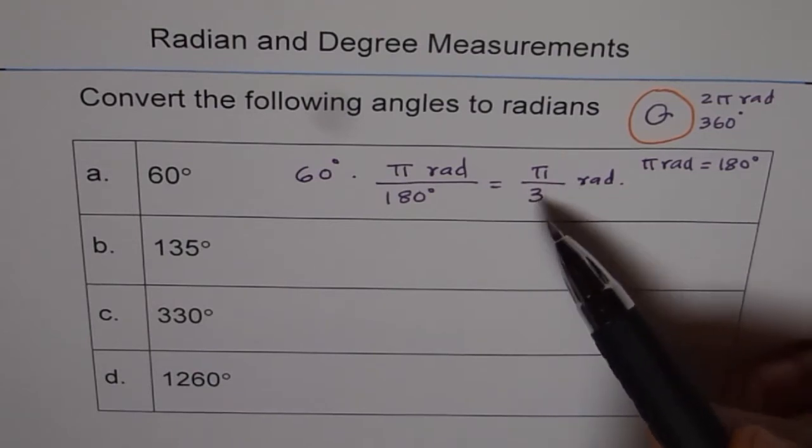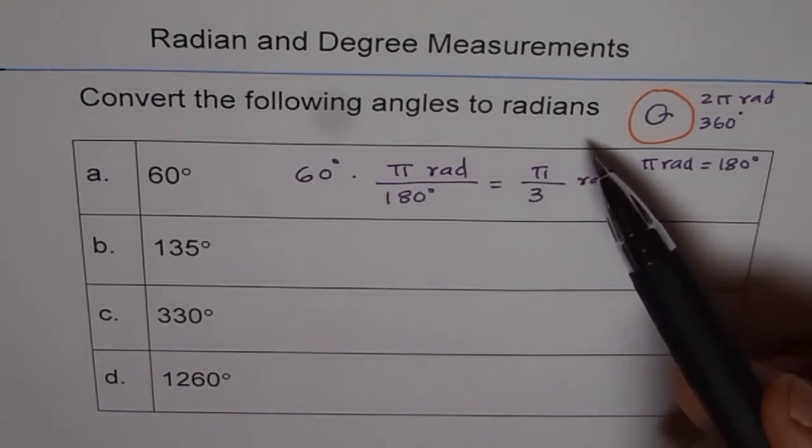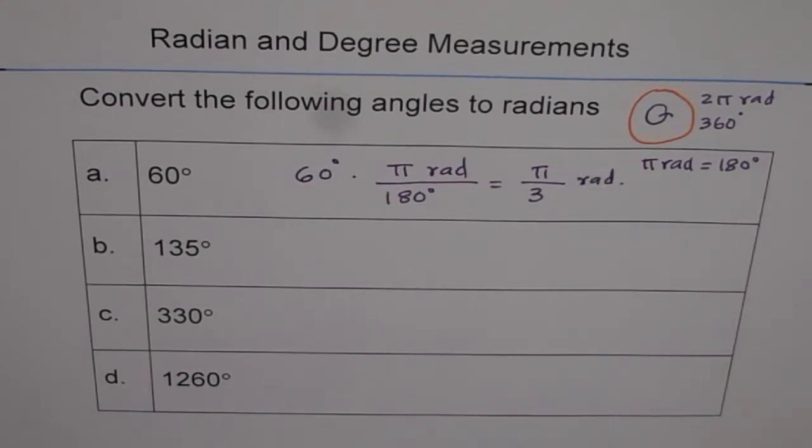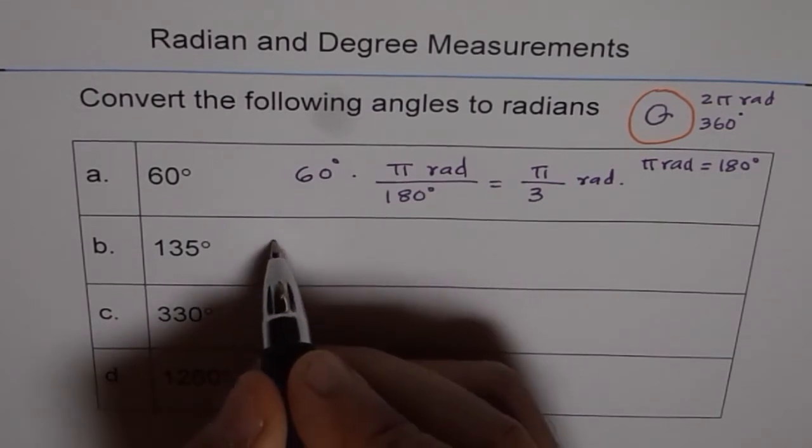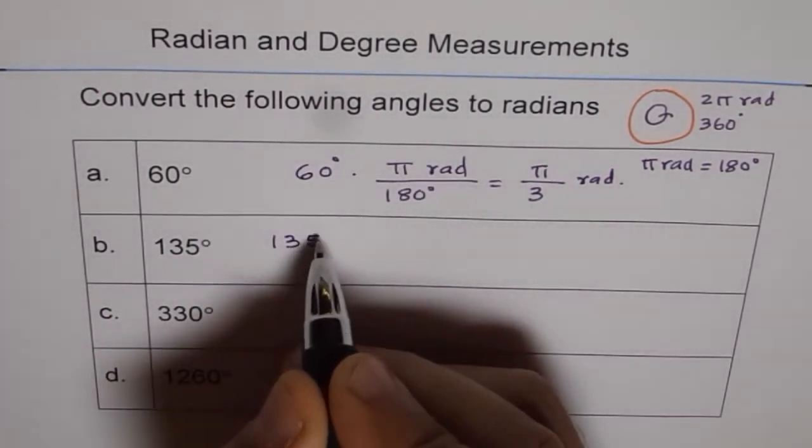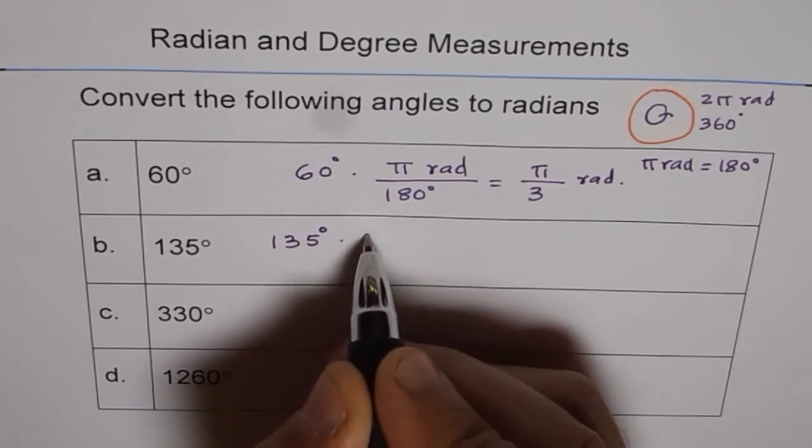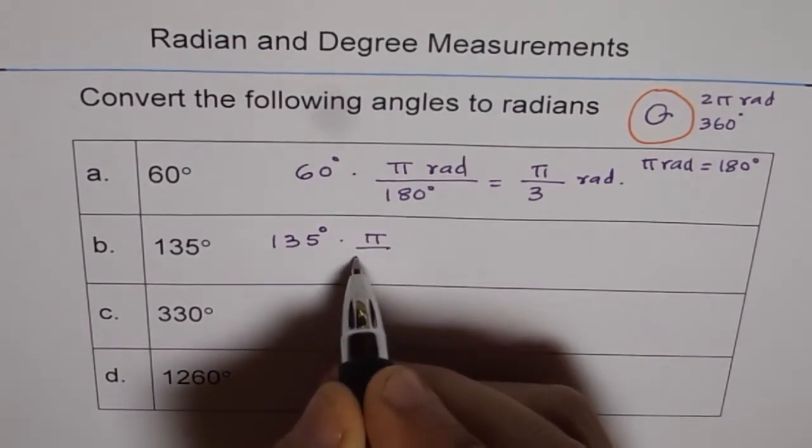So we can always write this as π over 3 radians. Well, this answer is the exact answer. If it is asked to write it in decimal places, use your calculator and then write it in decimal places. Now let us do the others. So 135, you can always use calculator and write down your answer.